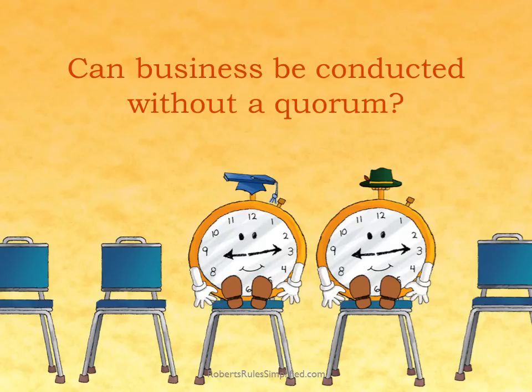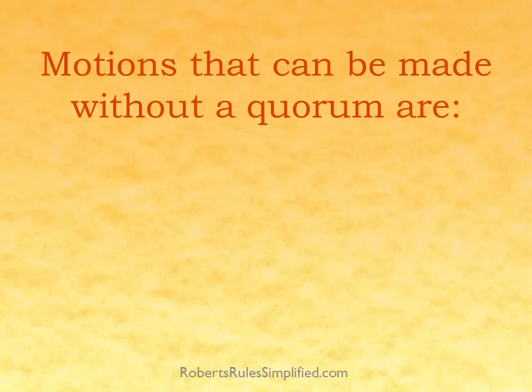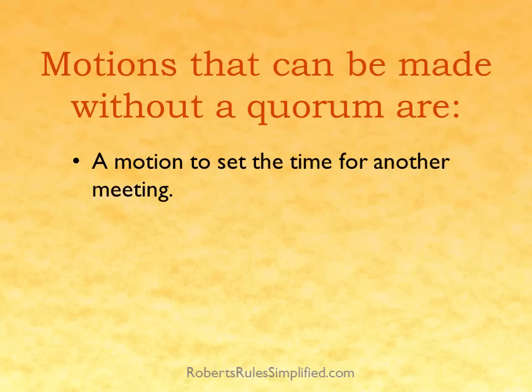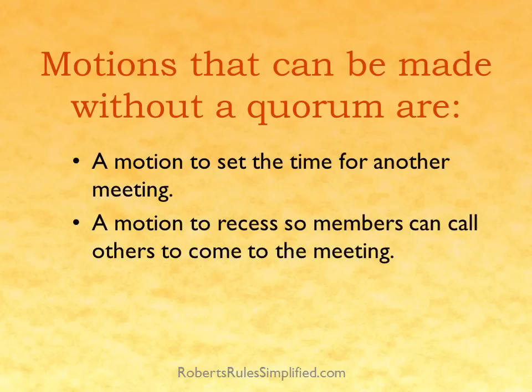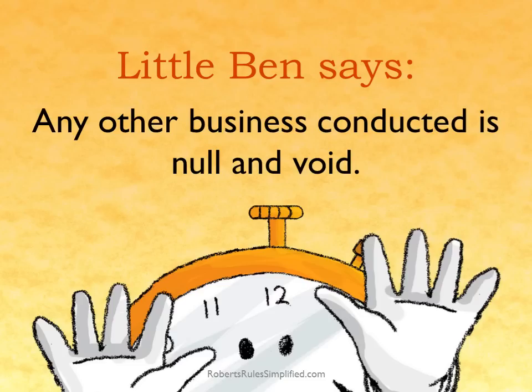Can business be conducted without a quorum? No, but three motions can be made. Motions that can be made without a quorum are: a motion to set the time for another meeting, a motion to recess so members can call others to come to the meeting, and the motion to adjourn. Little Ben says any other business conducted is null and void.